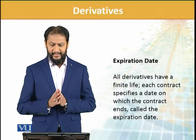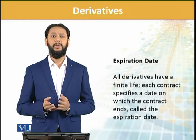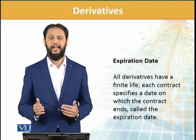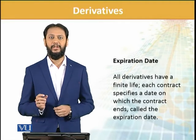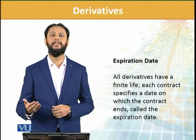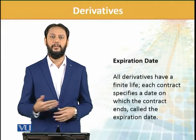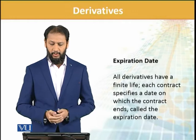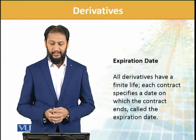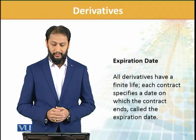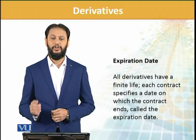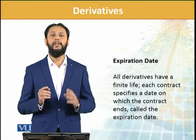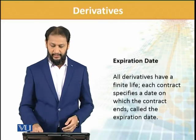Expiration date — nothing can be open-ended; it should have a specified deadline, timeline, expiration date. This is very important — what term are we talking about? Is it three months, is it six months? It could be any period, but it must be defined. All derivatives have a finite life. Each contract specifies a date on which the contract ends, called the expiration date — that it is valid until this date. Whatever date it may be, it being specific is essential.